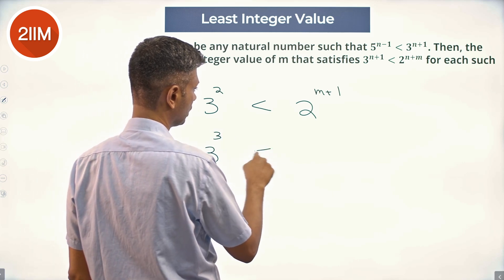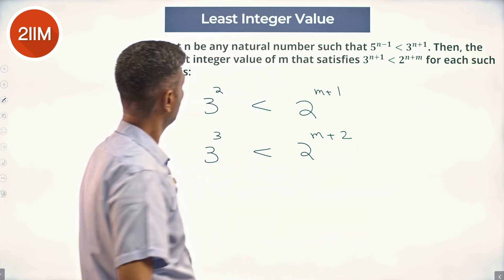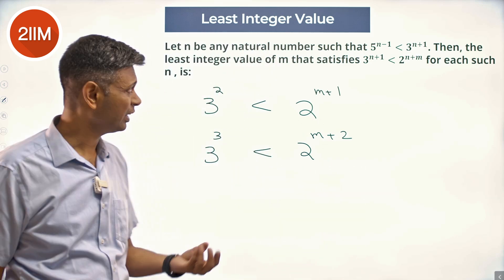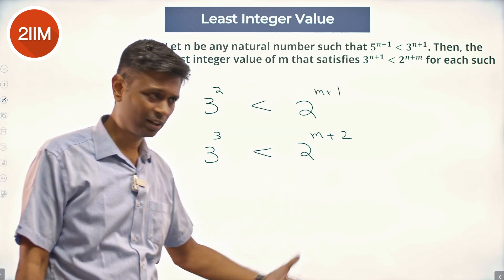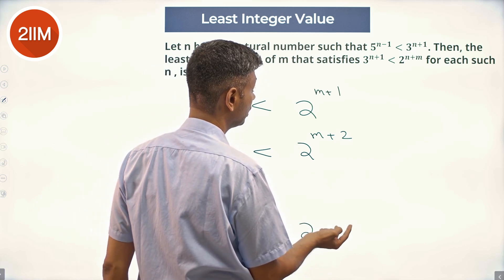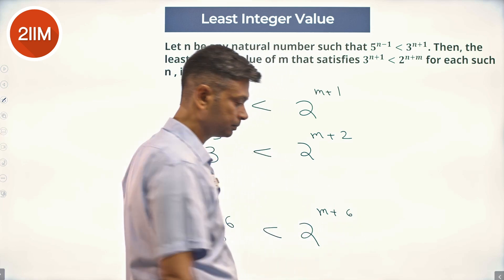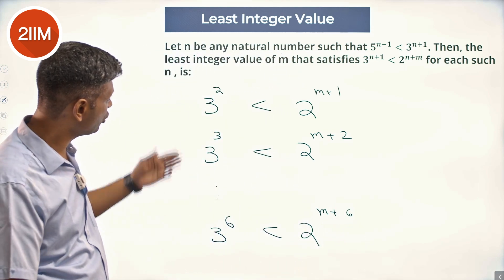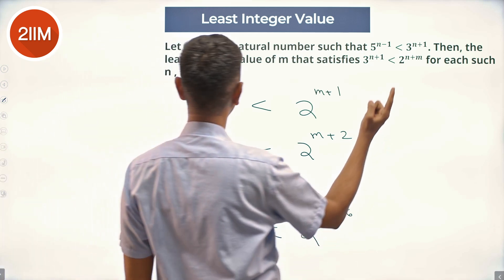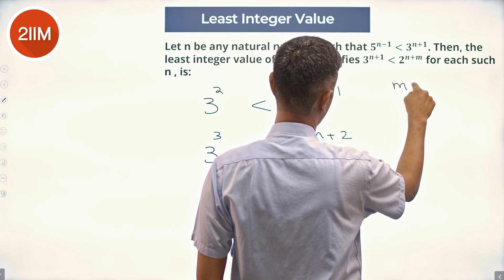n could be 2: 3^3 < 2^(m+2). You want to find the least integer value of m that satisfies this. We have to find the least value of m here, here, here, all the way till n=6: 3^6 < 2^(m+6). 3^2 is 9, 9 < 2^(m+1), 9 < 16. For this case,